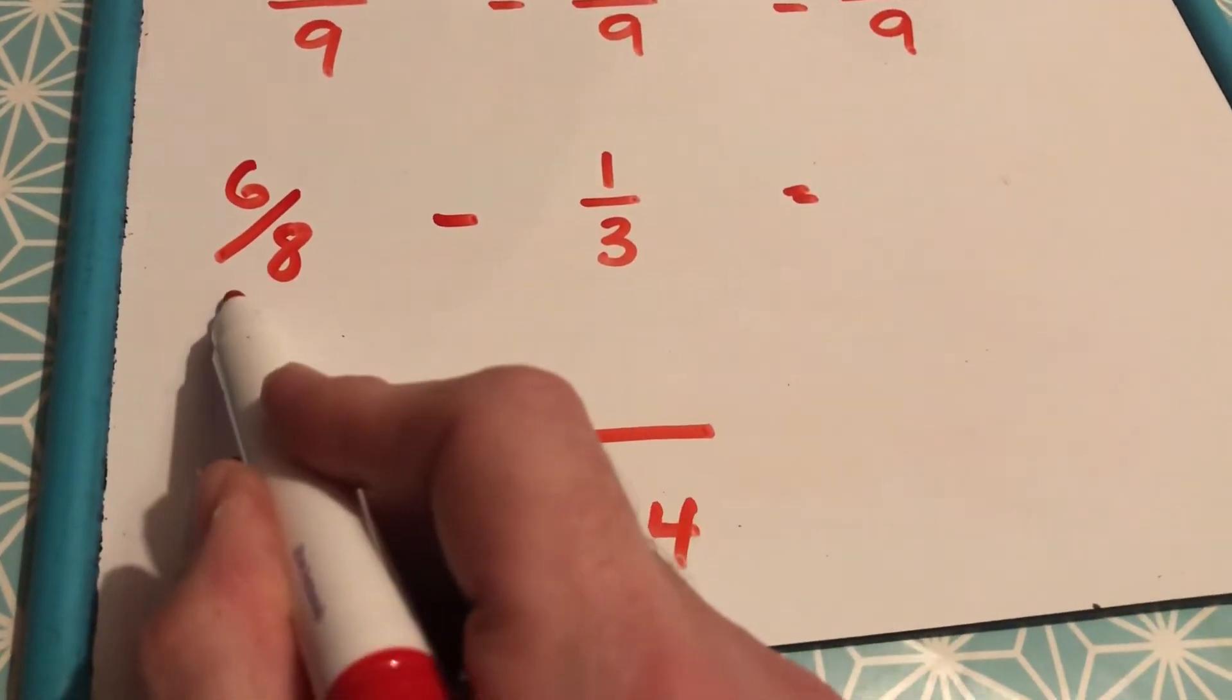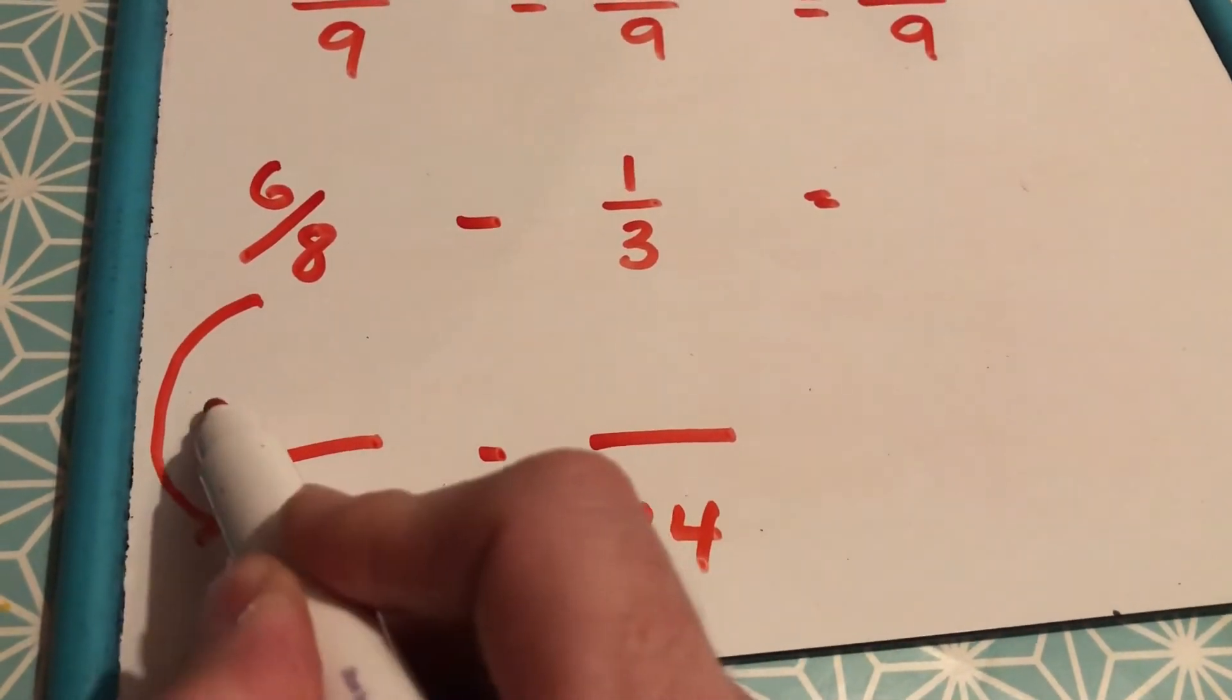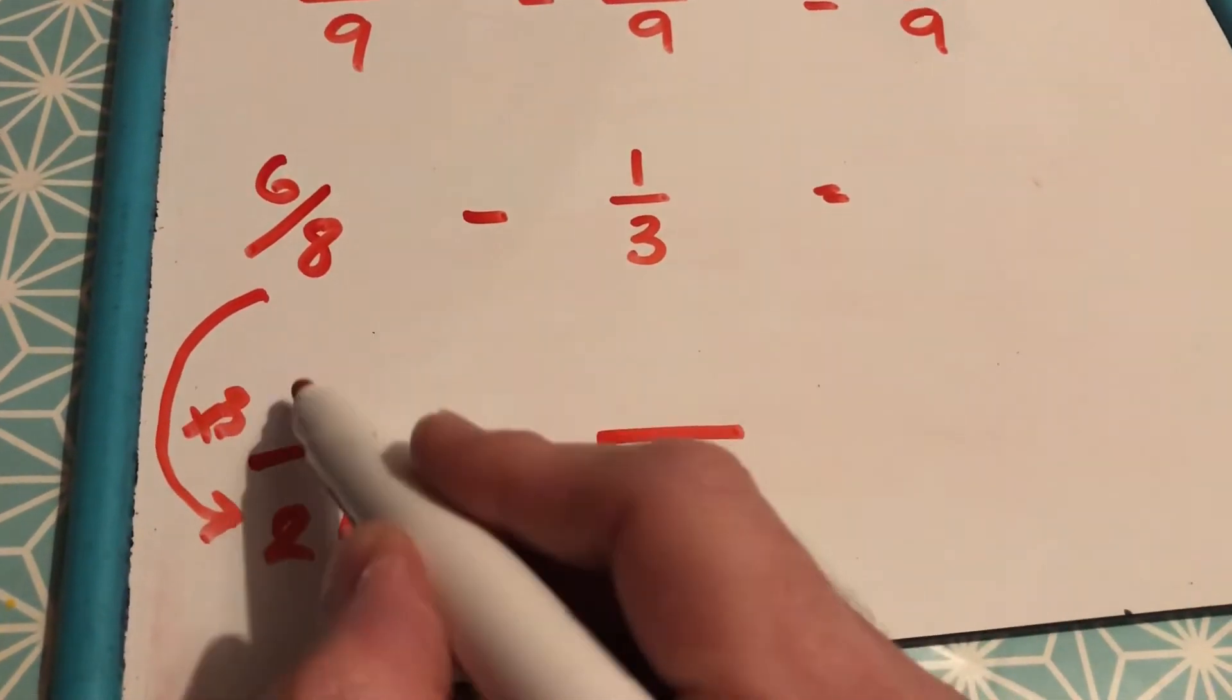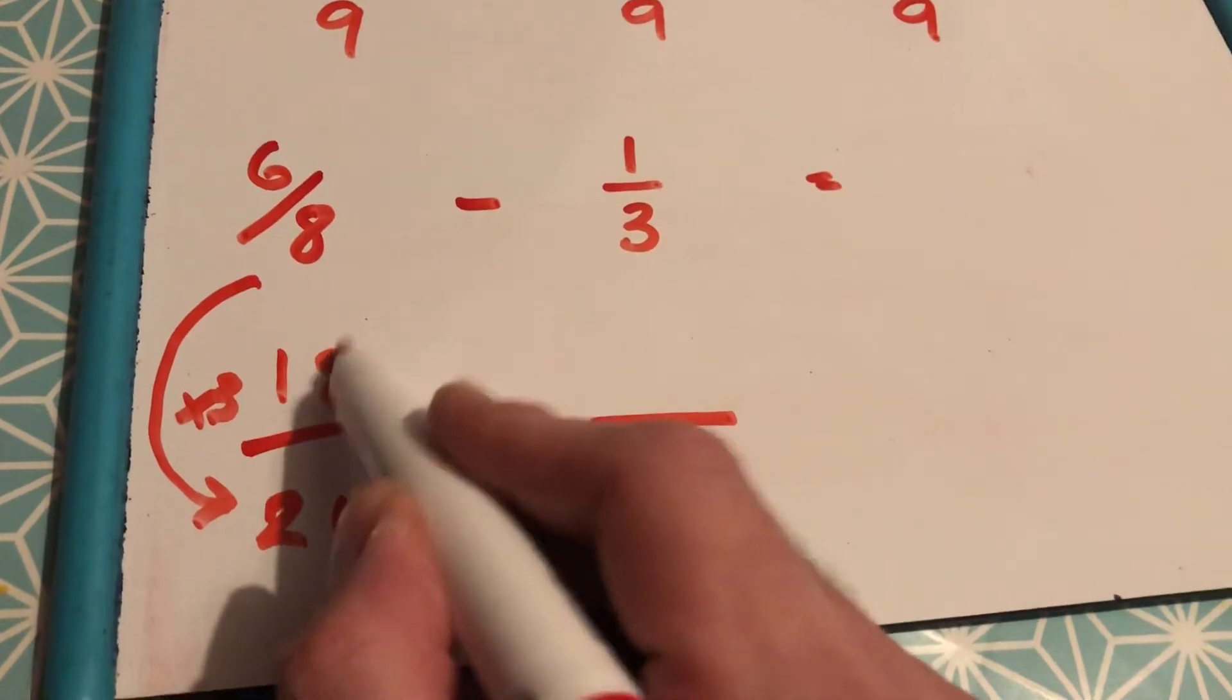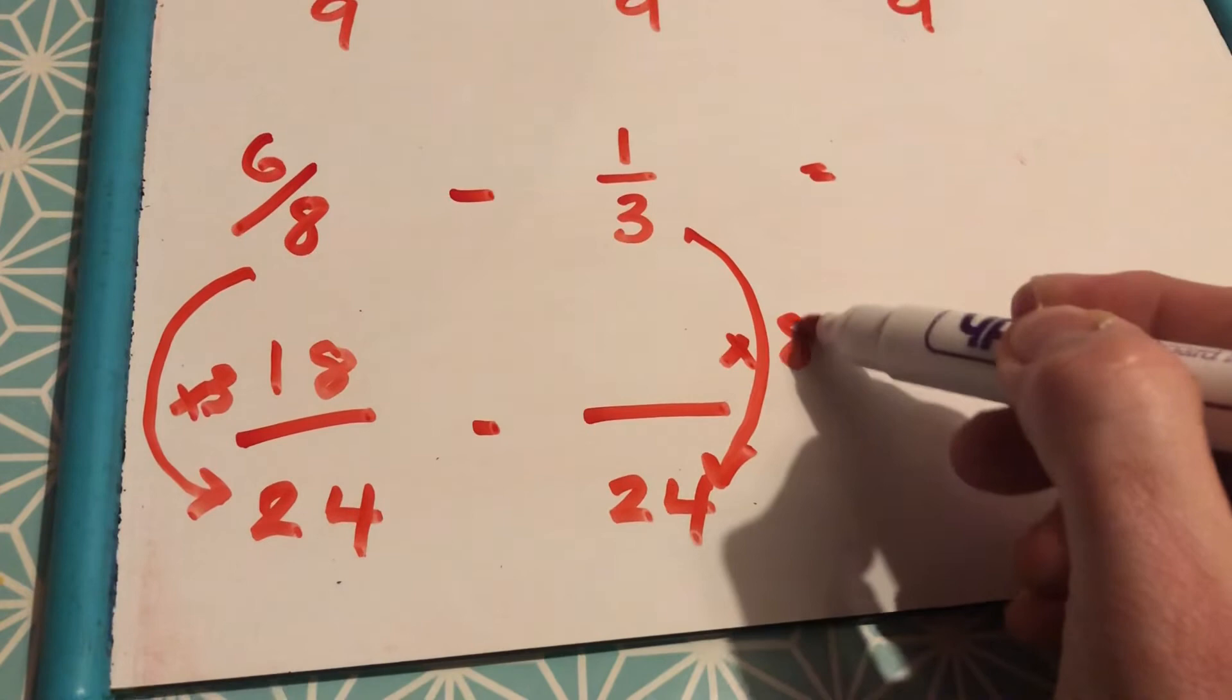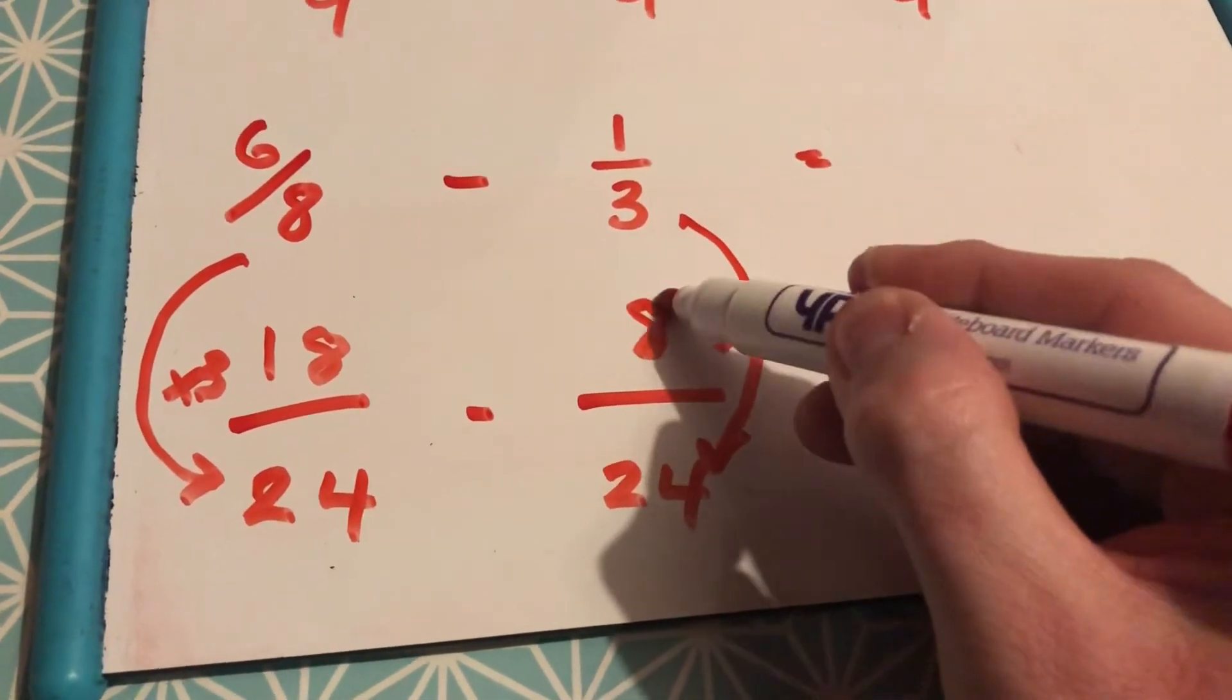What do you do to 8 to make 24? You times it by 3. 6 times 3 is 18. What do you do to 3 to make 24? You times it by 8. 1 times 8 is 8.